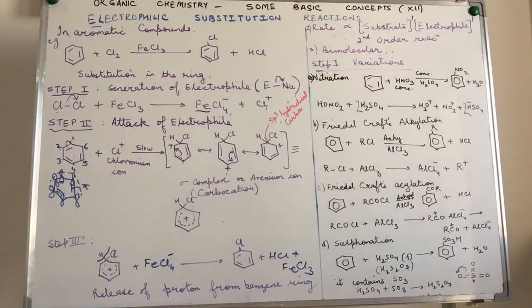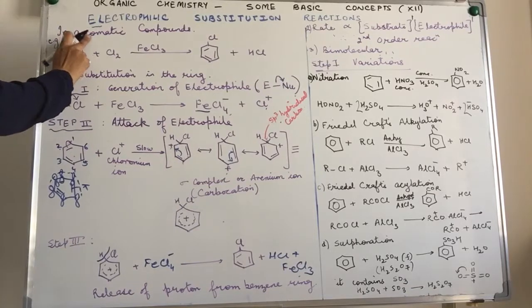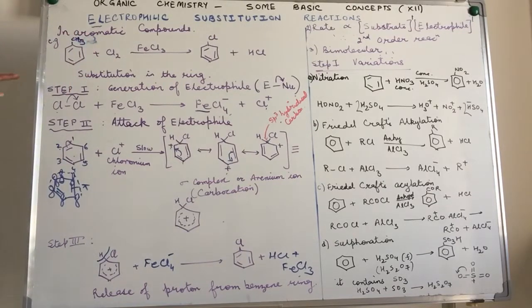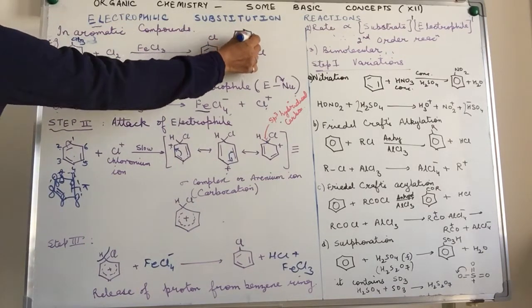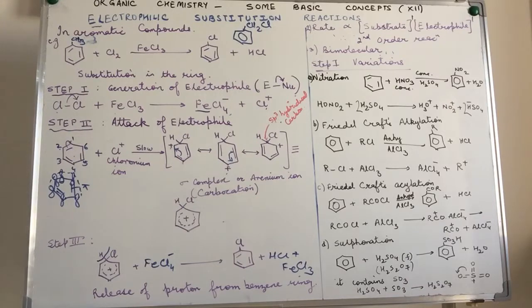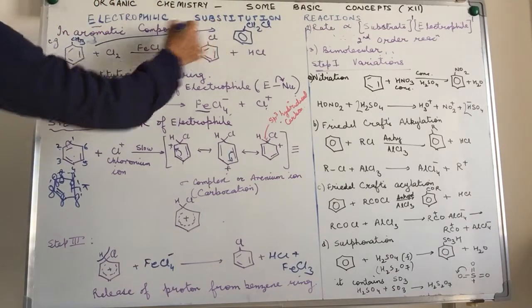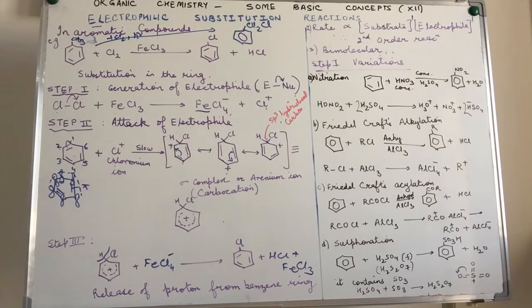If this particular halogenation was to take place on the side chain—suppose I have CH3 and this reaction is taking place with chlorine in the presence of light—the product I will get is CH2Cl. In other words, replacement is taking place in the side chain, not in the benzene ring. In such a case, when we do chlorination in the presence of light, it becomes a totally different mechanism.